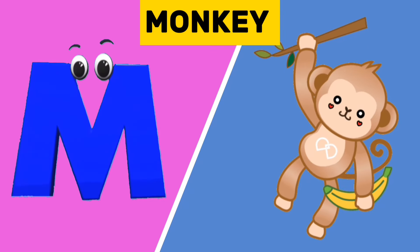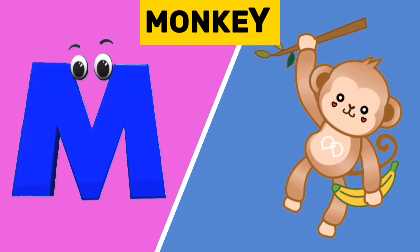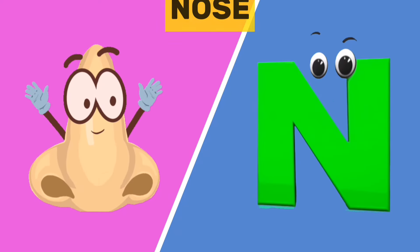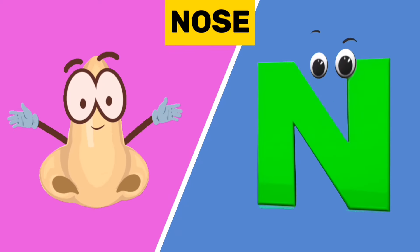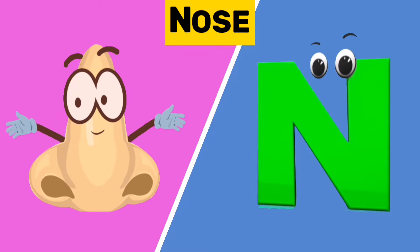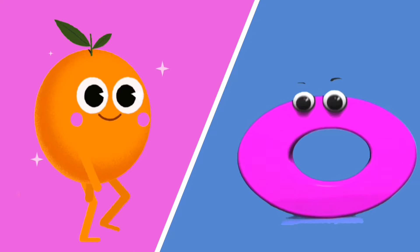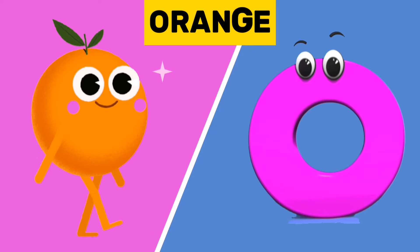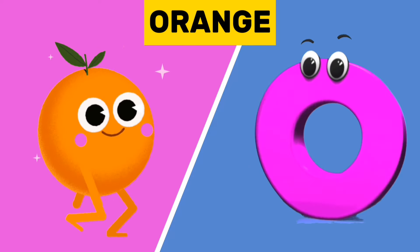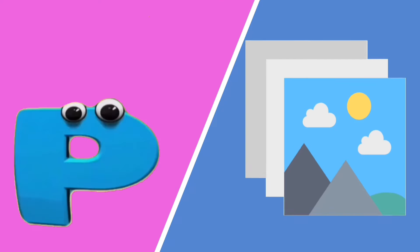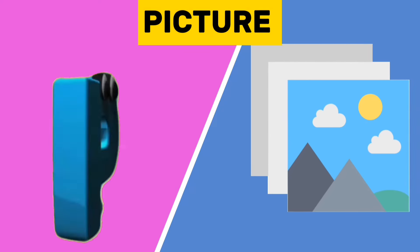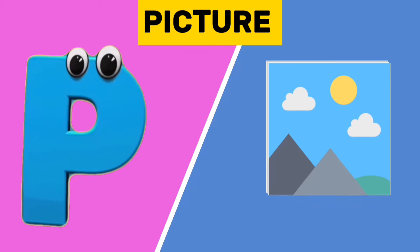M is for monkey. M, m, monkey. N is for nose. N, n, nose. O is for orange. O, o, orange. P is for picture. P, p, picture.